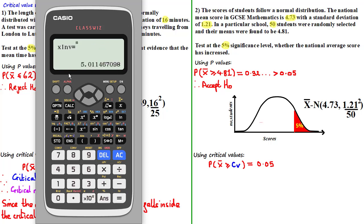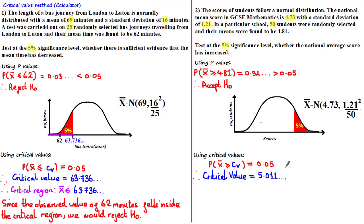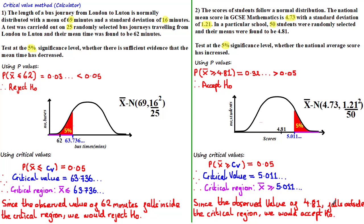Working this out gives us a critical value of 5.011. We can show where this critical value would lie on the diagram. Now we've found the critical value, we can define the critical region, illustrated by this purple line, as the set of observed values that are greater than or equal to 5.011. In this question, we found that the observed value from the sample was 4.81. Since this value is less than the critical value, it lies to the left of the critical value, outside the critical region.